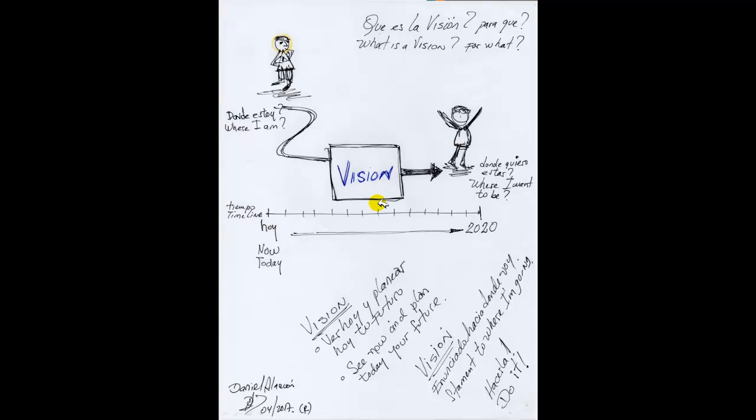And then I have to write it down. Vision is see me now and plan today my future. That's a vision. And it's a statement that establishes where I'm going. It's my path for the future.